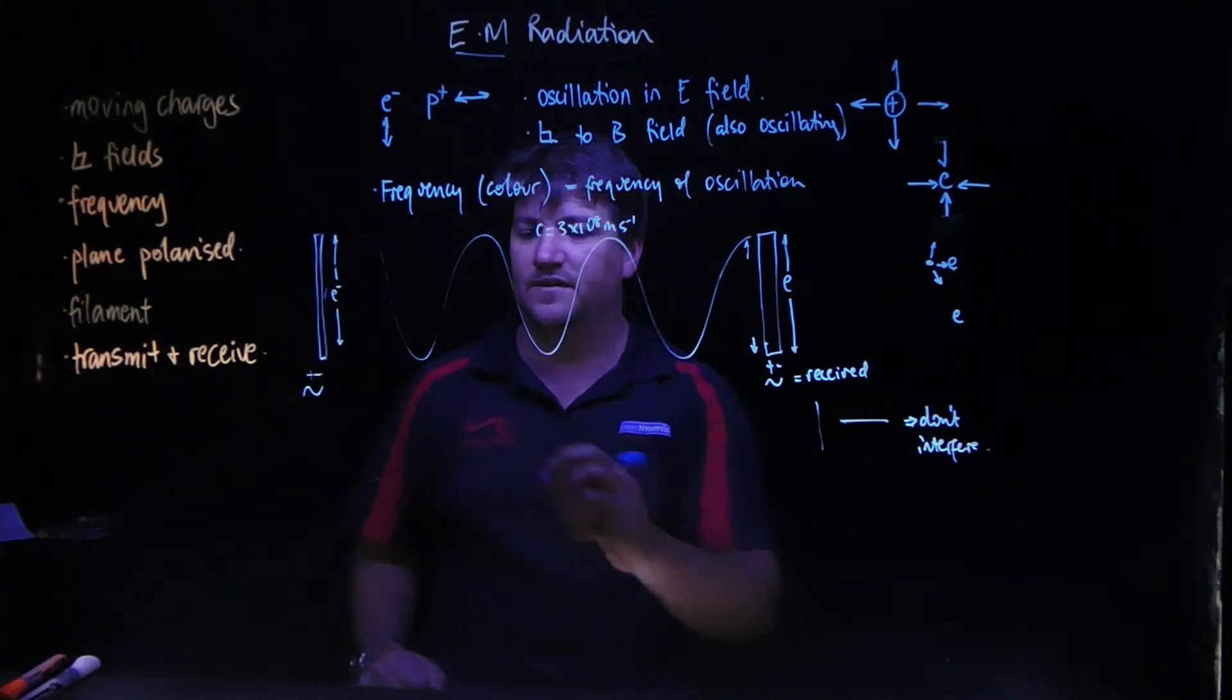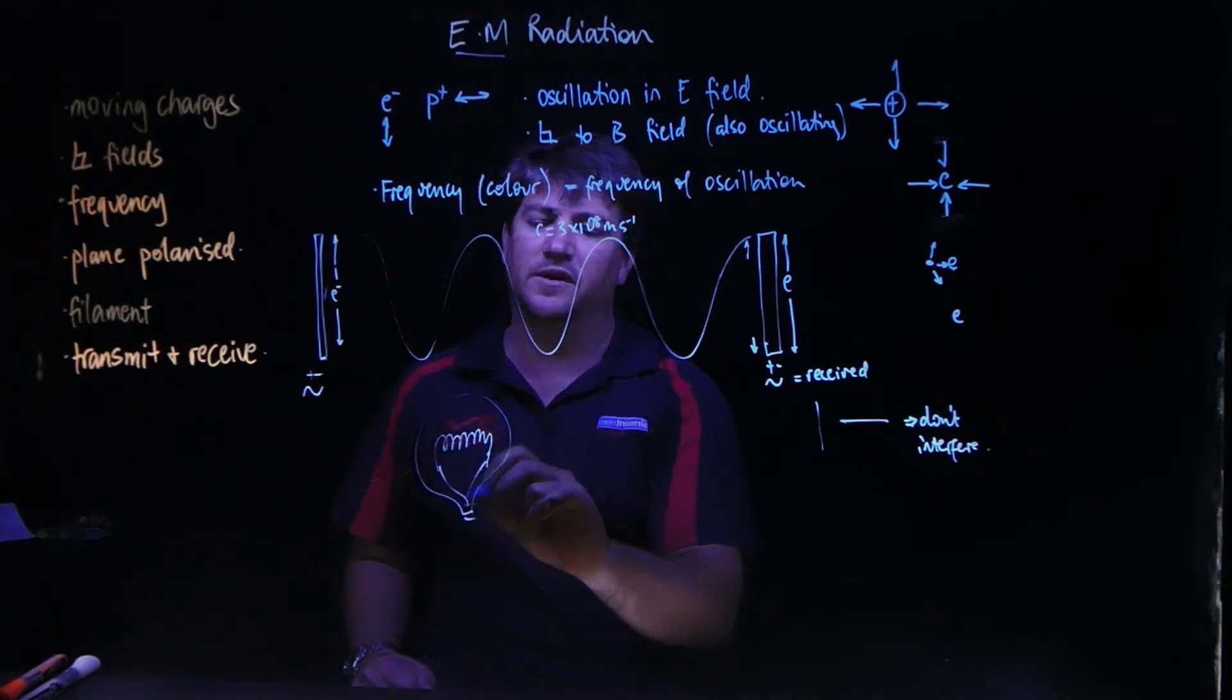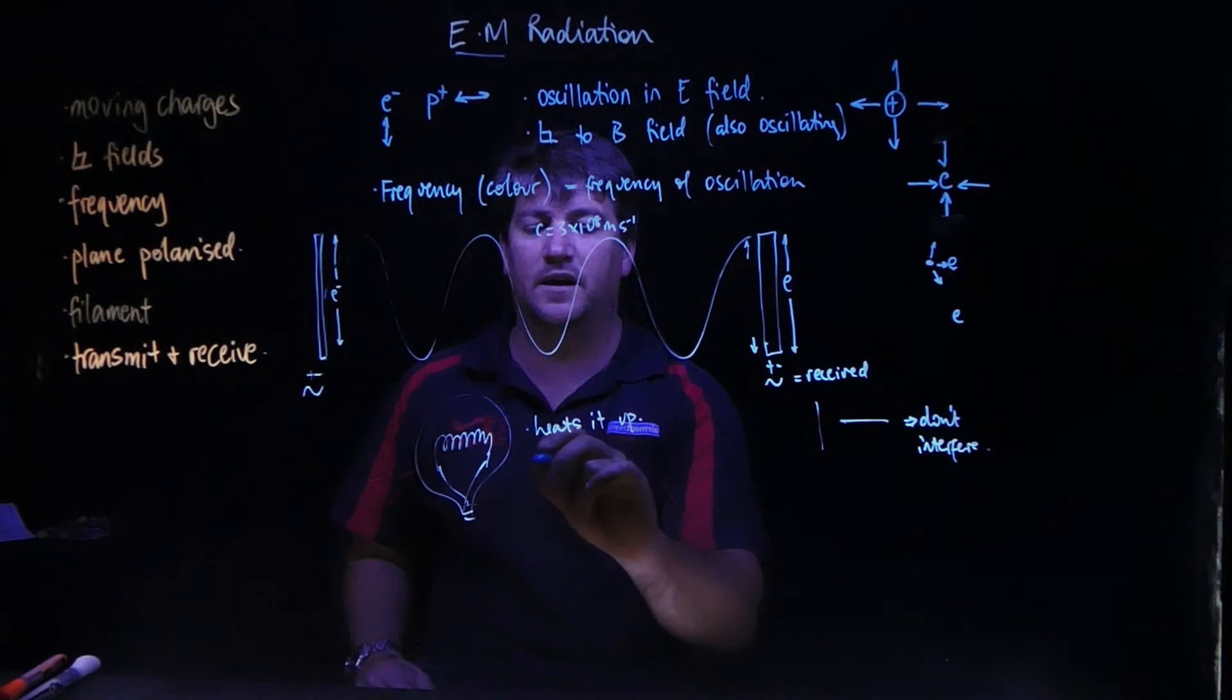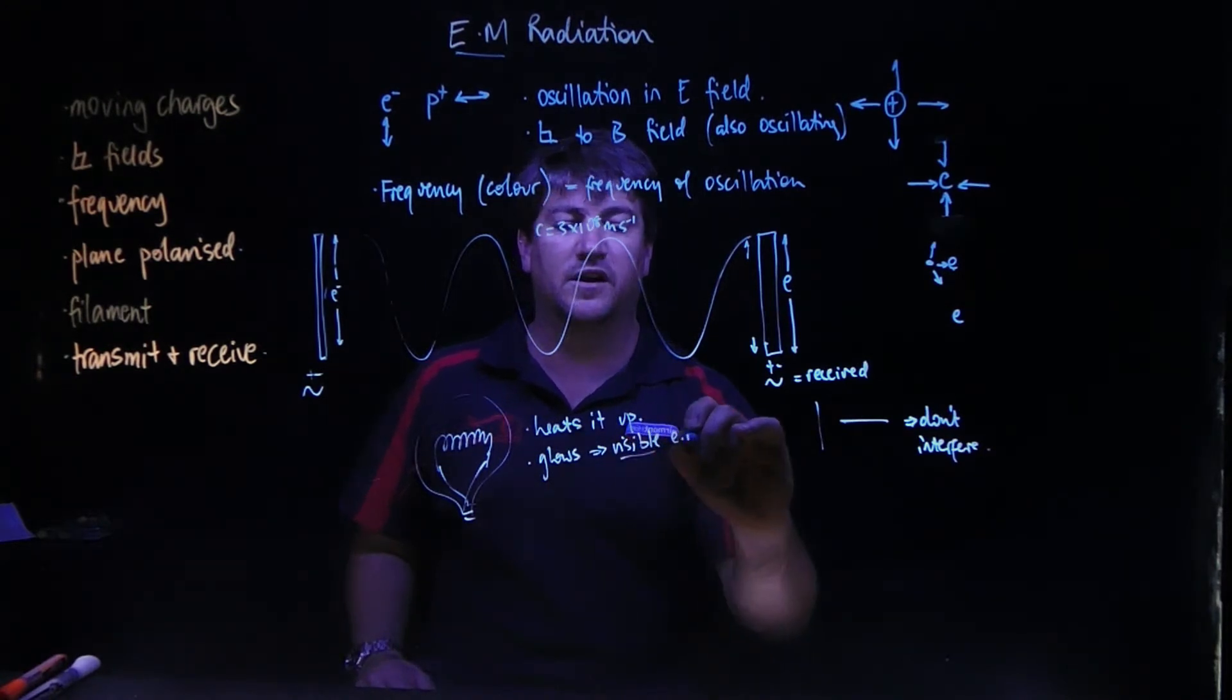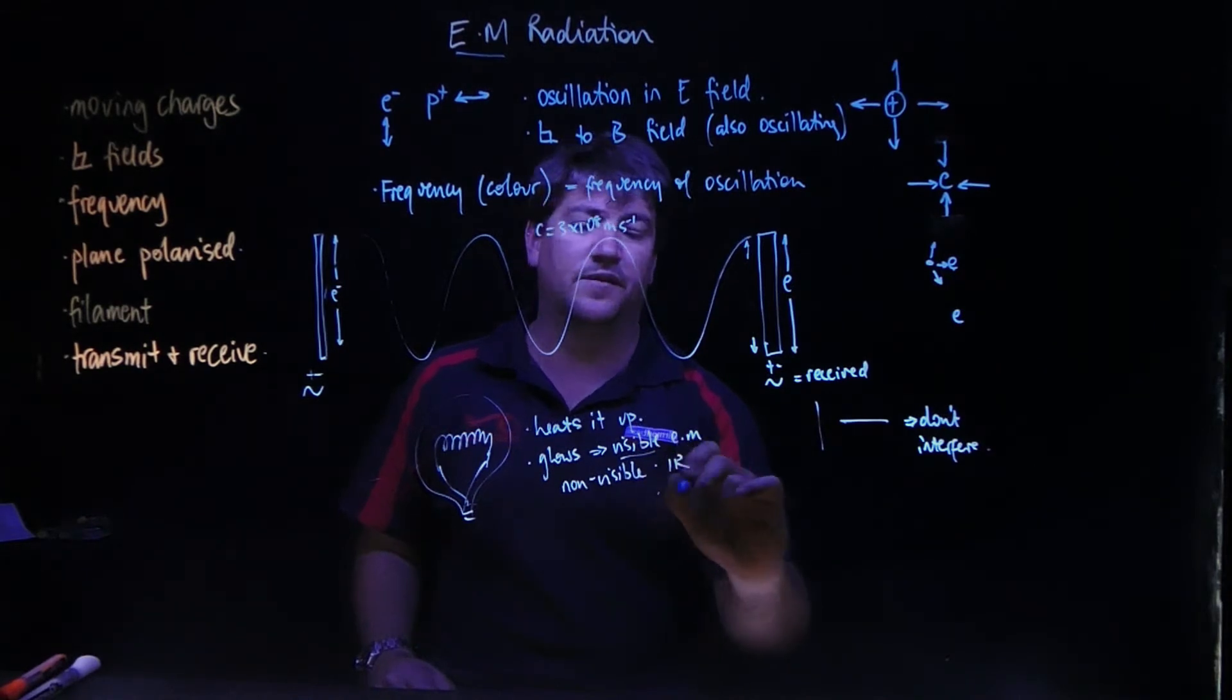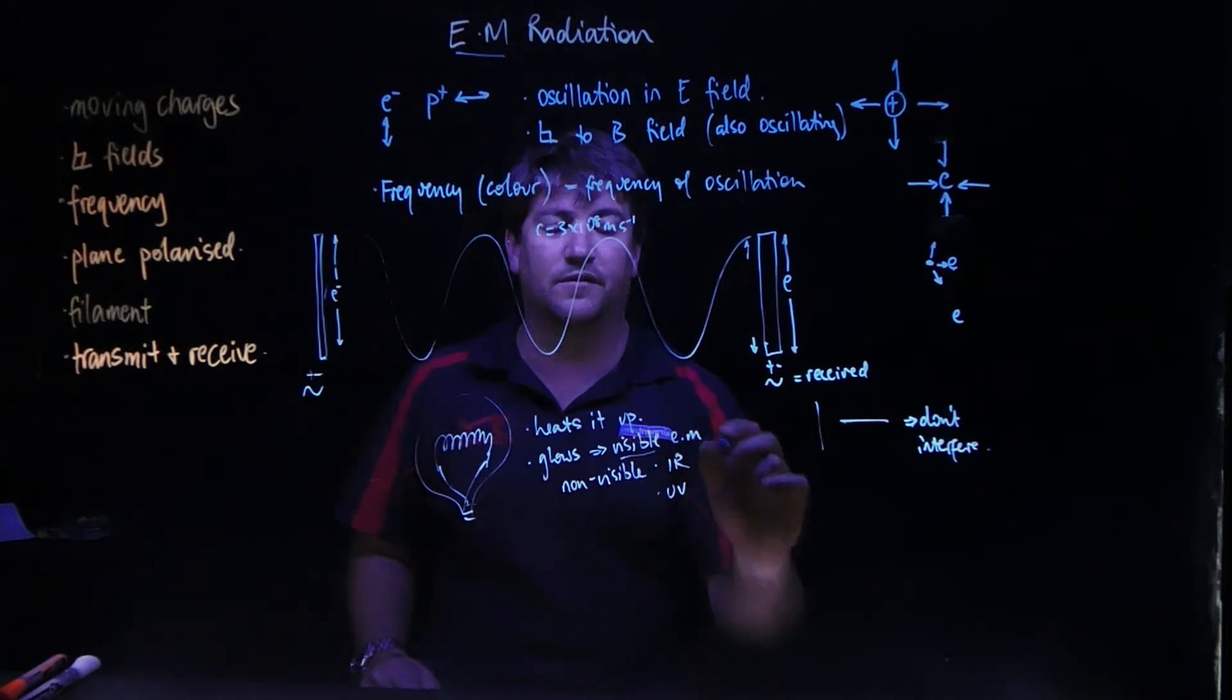In a filament, what we end up doing is having a coil of wire like this inside some sort of globe, and we're passing a whole bunch of electricity through this globe and it heats it up. It heats it up so that it glows, and it glows because it's giving off visible EM radiation. It's also giving off some non-visible, which would be infrared, probably a little bit of ultraviolet, but a lot of what it's giving off is visible electromagnetic radiation.